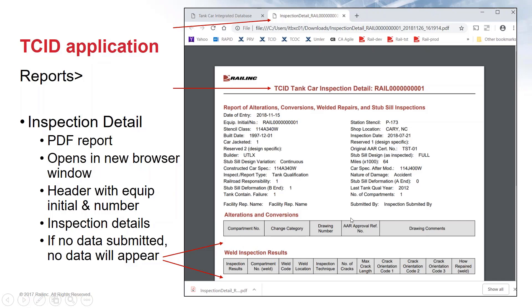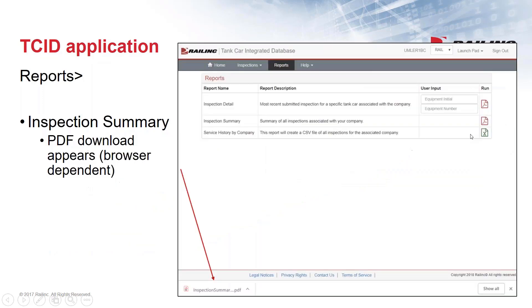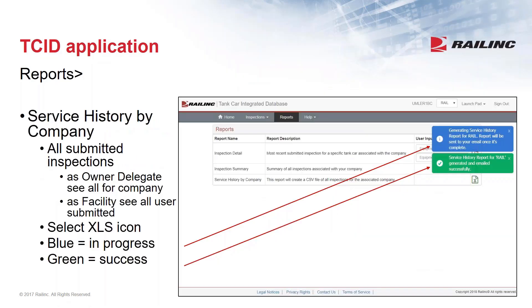The Inspection Summary Report works very similarly - just click the PDF icon. As a reminder: an owner delegate will see all submitted inspections for their company, while a facility user will only see their own submitted inspections. Clicking the icon brings up the blue progress window, then the PDF download appears, and selecting it opens in a new browser window. The report header shows 'TKID Inspection Summary' and the company you're working on behalf of, followed by a high-level list of submitted inspections.